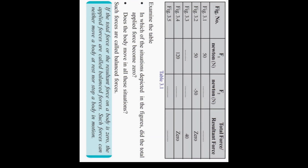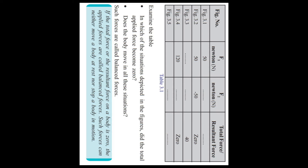Now you have to fill that table using the figures. In figure 1: F1 is 50 newtons, F2 is 50 newtons, total force is 100 newtons. In figure 2: F1 is 50 newtons and F2 is minus 50 newtons because it is in the opposite direction, so the resultant force becomes 0. In figure 3: F1 is 80 newtons and F2 is minus 40 newtons, so the resultant force is 40 newtons. In figure 4: F1 is 120 newtons and F2 is minus 120 newtons, so the resultant force becomes 0.